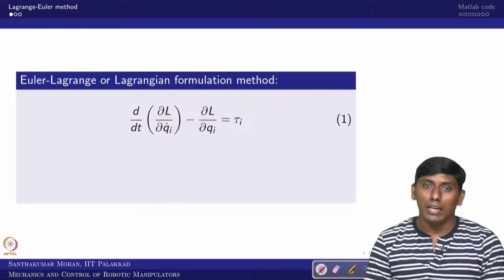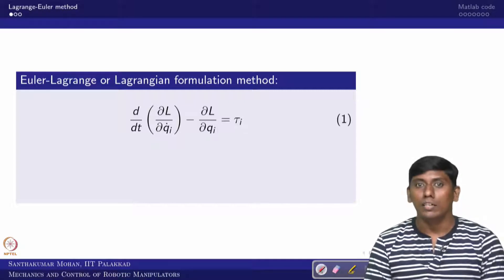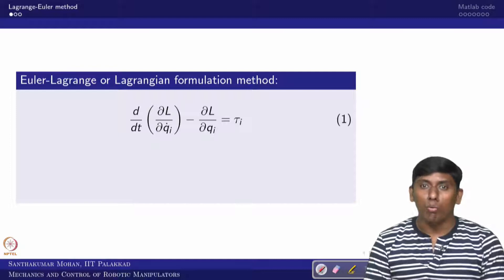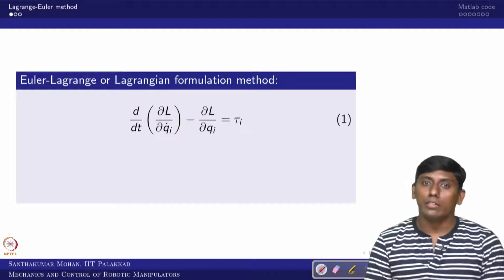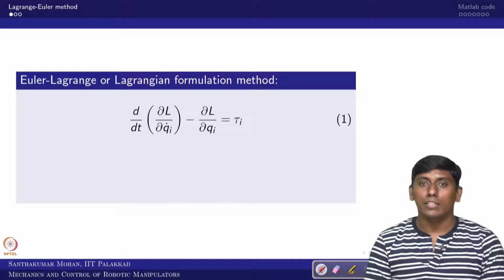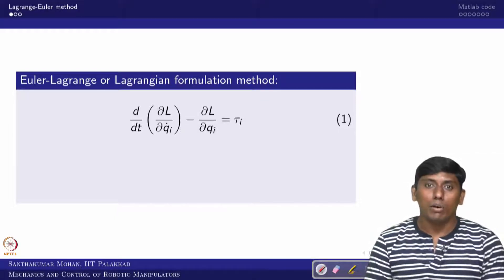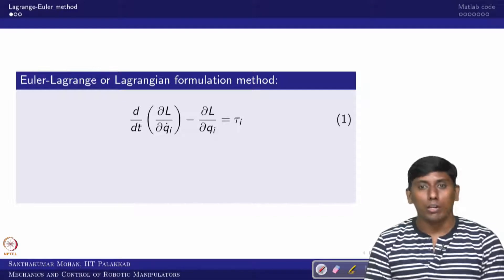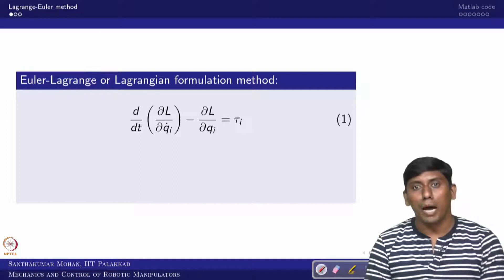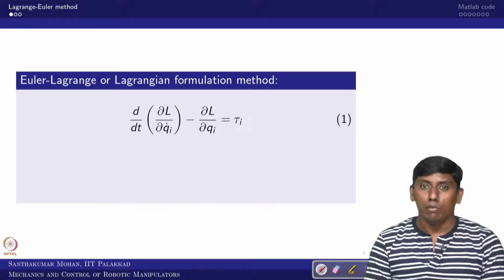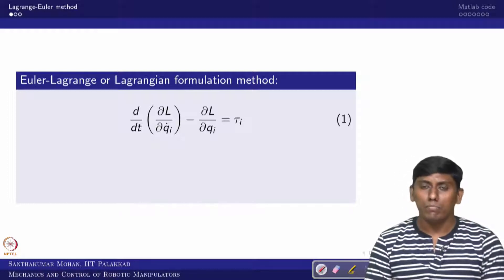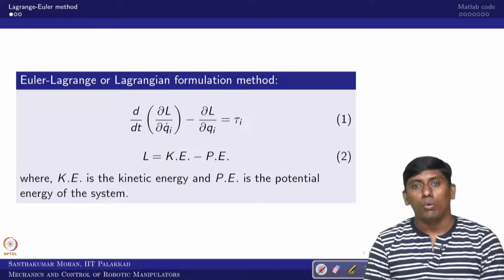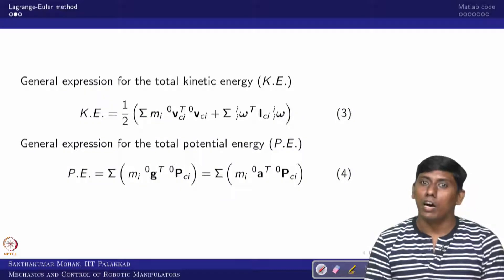The Lagrangian L is kinetic energy minus potential energy. When we derive the generalized force tau_i, it involves two operations: a partial derivative and a time derivative. Writing the MATLAB code is complex because it mixes both. Tools like Mathematica or Maple may be more straightforward, but since we started with MATLAB we will see how to do it there. We will recall the Lagrangian and derive the kinetic energy and potential energy.